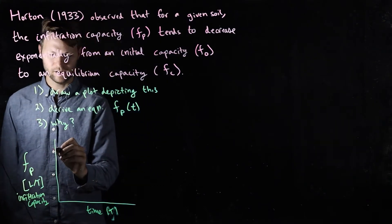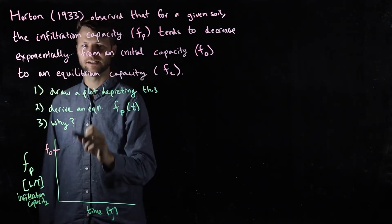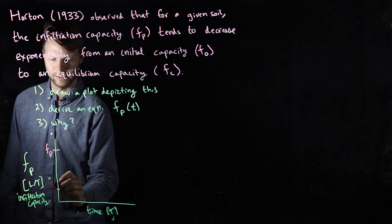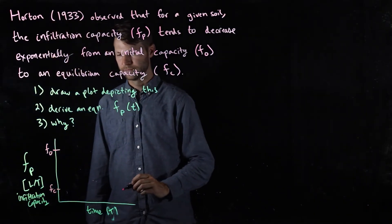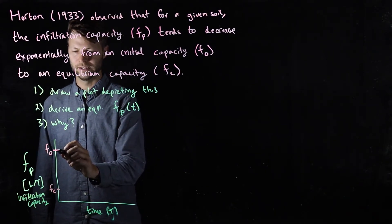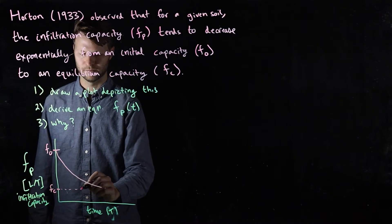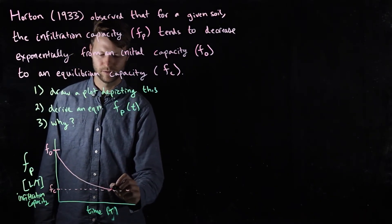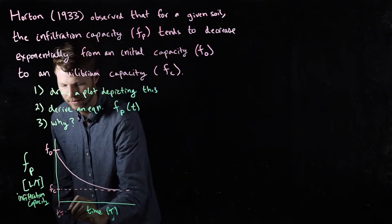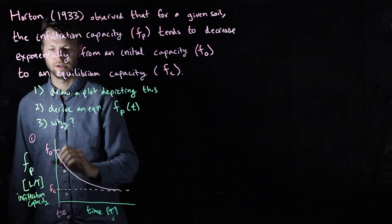What do we know? Well, we know it's going to start at some rate f_0, and then it will decrease exponentially to some equilibrium capacity f_c. So here is the equilibrium capacity. What does the decreasing exponential function look like? It decreases most rapidly in the beginning and then the rate of decrease tends to slow down. So I'll project this horizontally. We would see something like this. This is at time t equals zero. So this is part one, draw the plot.